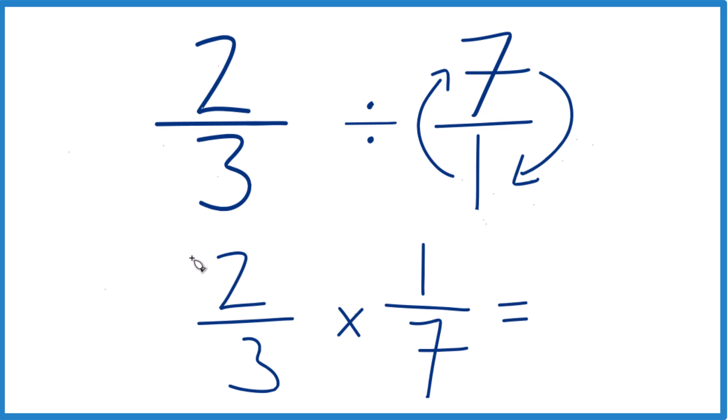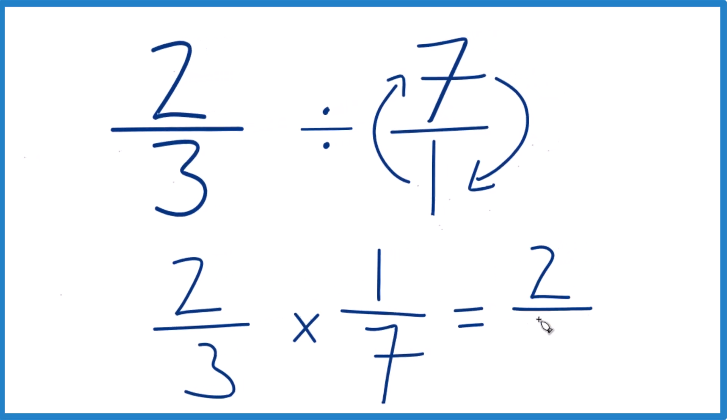Now with fractions, we multiply the numerators. Two times one is two, and then the denominators. Three times seven, that's twenty-one.